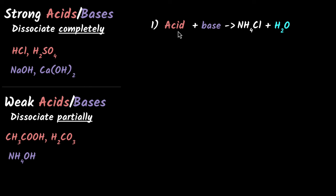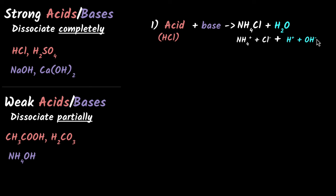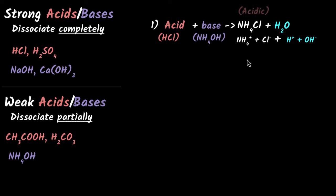So all we need to figure out is whether the acid and base are strong or weak. Let me just dissociate the salt and see what we get. If I dissociate NH₄Cl, I get NH₄⁺ and Cl⁻ ions. If I dissociate H₂O, I get H⁺ and OH⁻ ions. Now I can say H⁺ must have been with Cl⁻ to give HCl, so the acid must have been HCl. And NH₄⁺ must have been with OH⁻, so the base must have been NH₄OH — ammonium hydroxide. HCl is a strong acid and ammonium hydroxide is a weak base, so we have a strong acid combining with a weak base, which means the acidic medium dominates and therefore our salt is acidic.